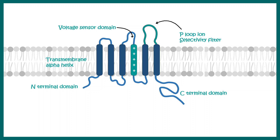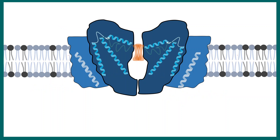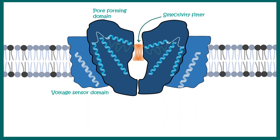Let's look at the crystallographic structure of a voltage-gated potassium channel. This cartoon depicts the crystallographic structure where we can see the pore-forming domain, the selectivity filter, and the voltage sensor domain. The voltage sensor domain, as mentioned, contains several positively charged residues responsible for the voltage sensing mechanism.